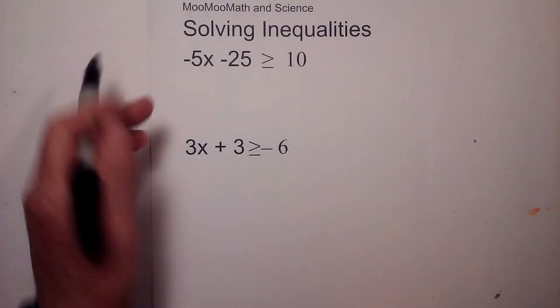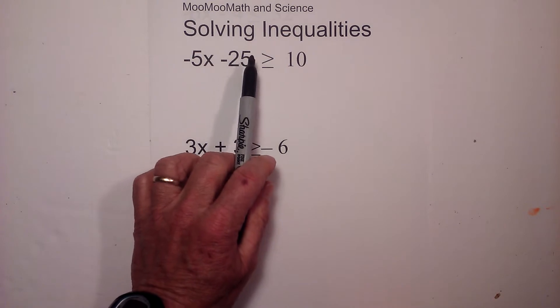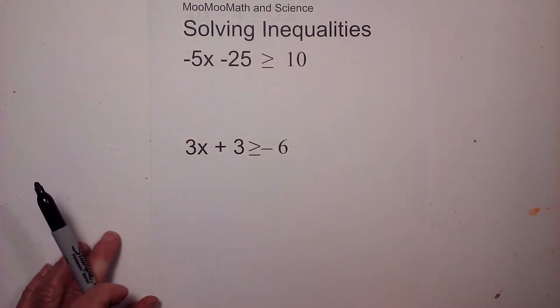In this video we're going to show how to solve inequalities like this: negative 5x minus 25 is greater than or equal to 10.